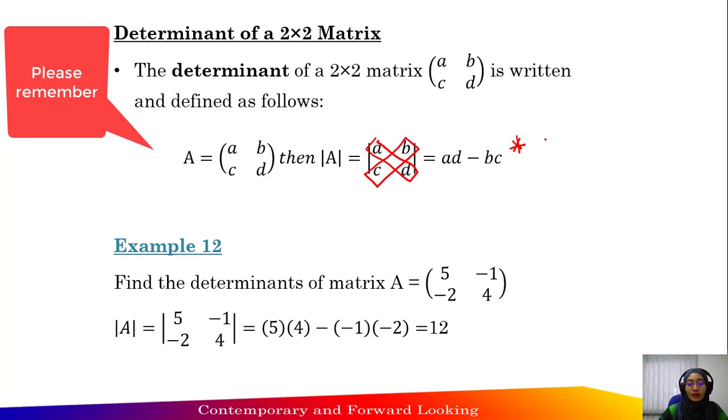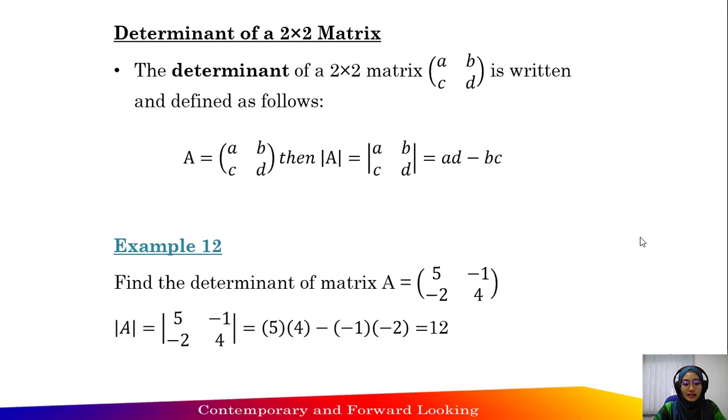This is the formula to find the determinant of a 2 by 2 matrix. Let's try example 12. What will be the determinant of matrix A? Given that matrix A equals 5, negative 1, negative 2, 4.